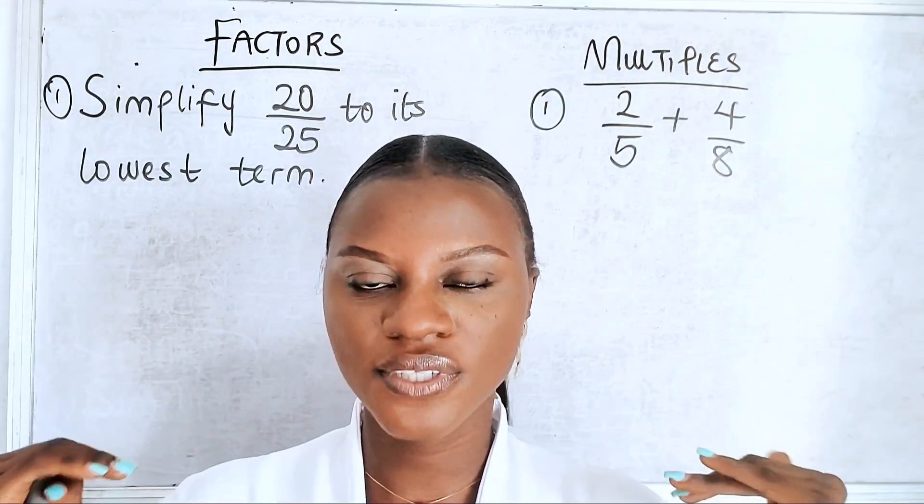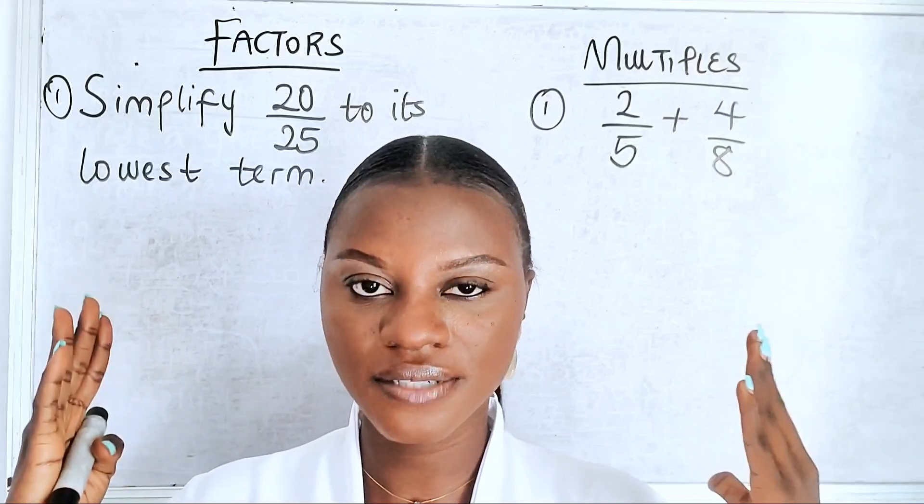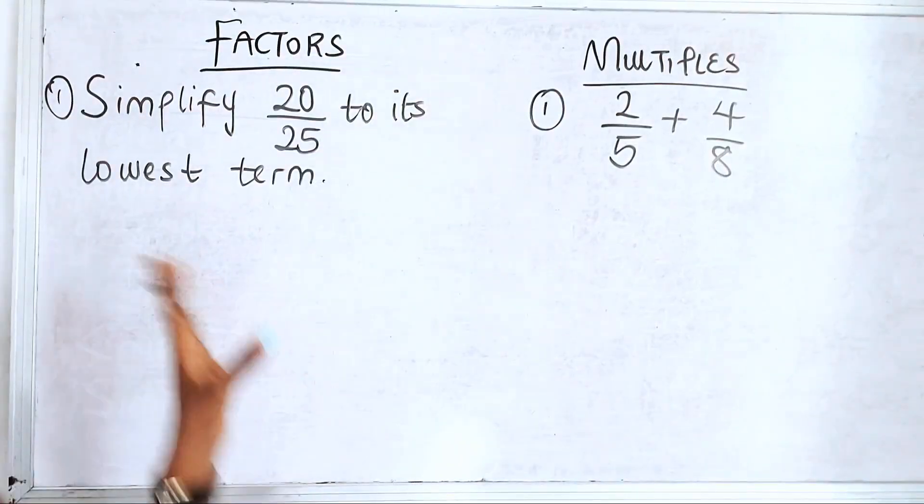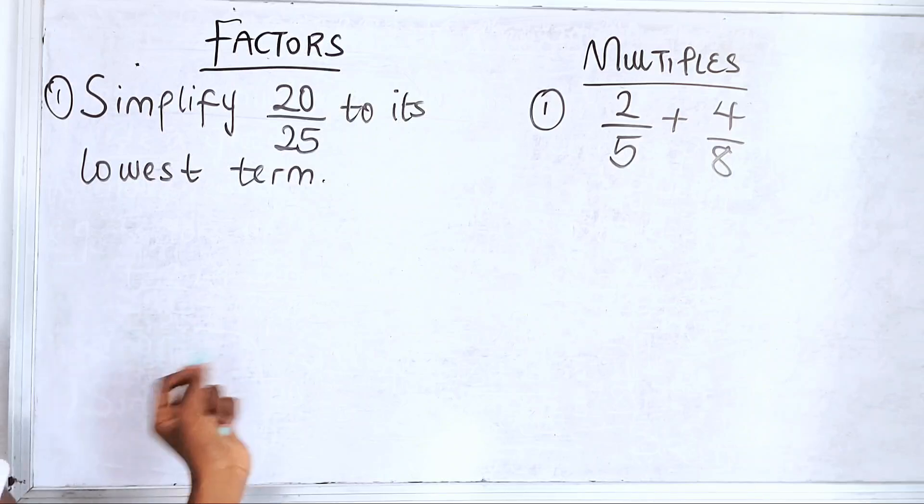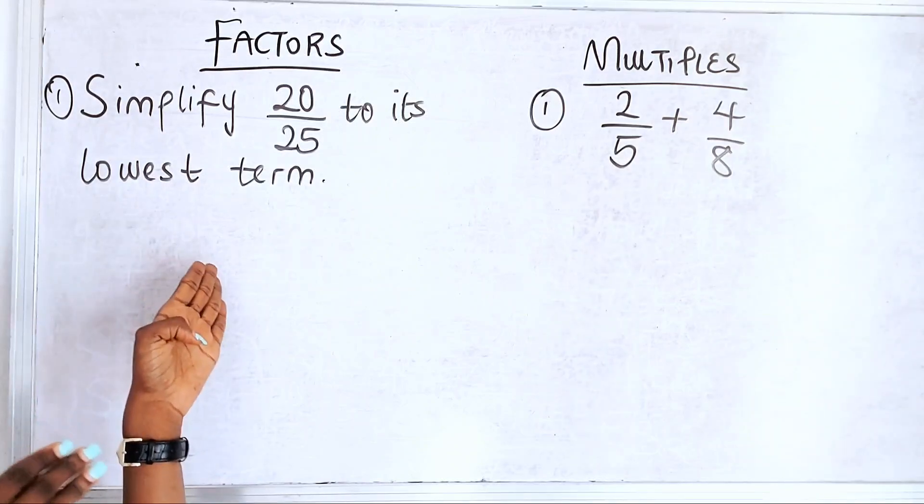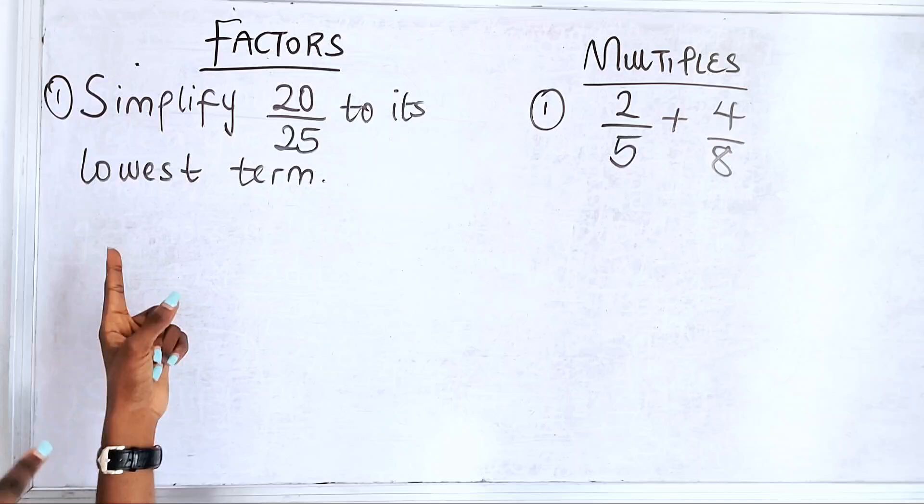Let's talk about some examples that you might come across when dealing with factors and multiples. So when you're asked to simplify a fraction to its lowest term, in this case, you're talking about highest common factors.